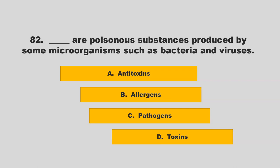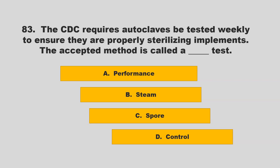Blank are poisonous substances produced by some microorganisms such as bacteria and viruses. Options: antitoxins, allergens, pathogens, or toxins. The correct answer is D: toxins.